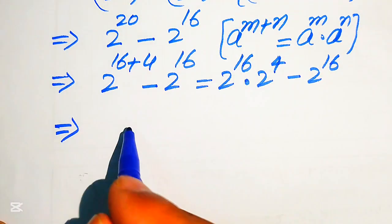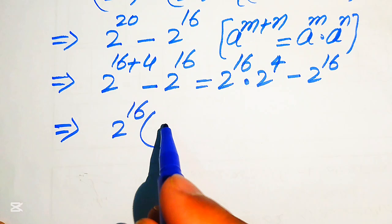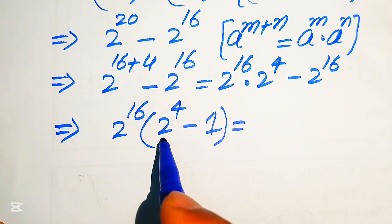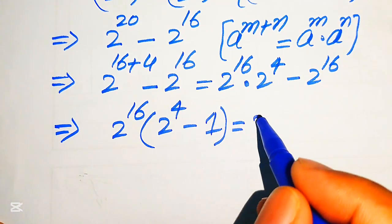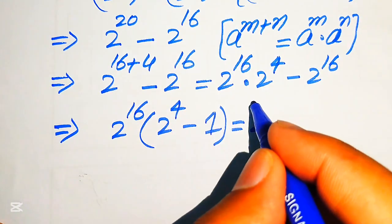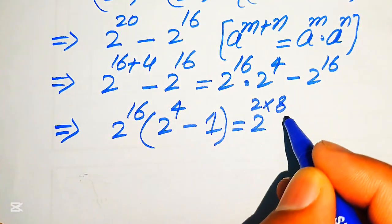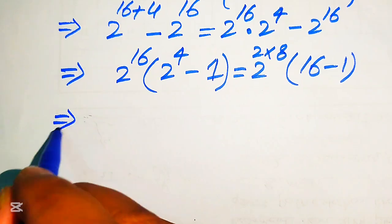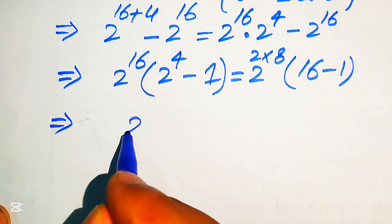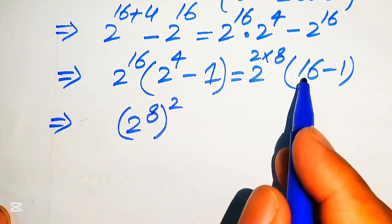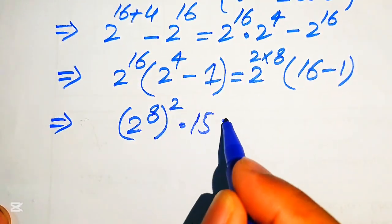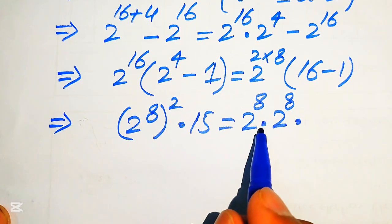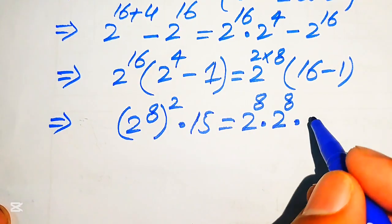Further in the next step, we take out 2 to the power of 16 as a common factor. When we take common 2 to the power of 16, the remaining values are 2 to the power of 4 minus 1. We know that 2 to the power of 4 equals 16. We also break 2 to the power of 16 as 2 to the power of 2 times 8, and write 2 to the power of 4 equals 16 minus 1. So the expression becomes 2 to the power of 8 whole squared, and 16 minus 1 equals 15.